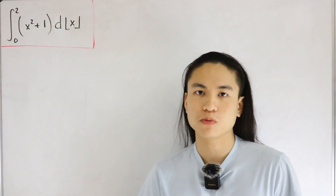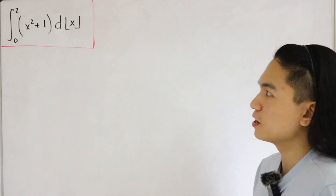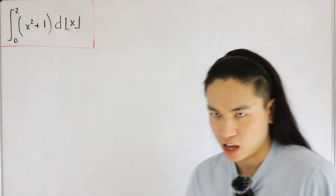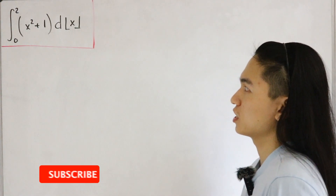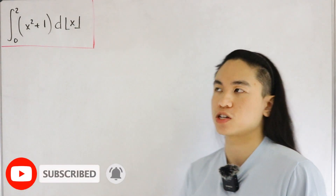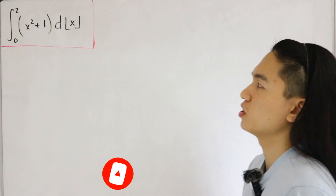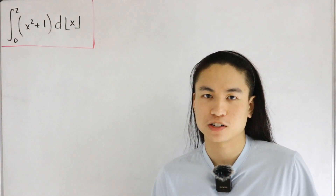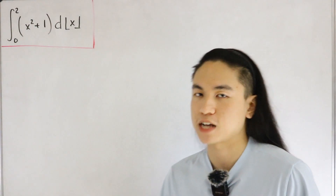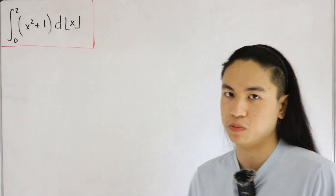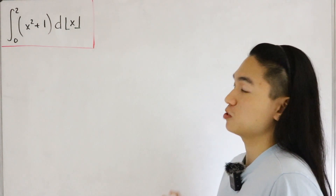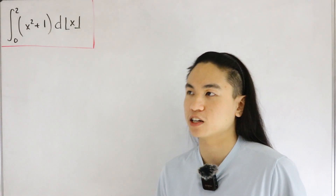We have a definite integral from zero to two of x squared plus one, but be careful — the differential here is with respect to the floor function of x. So it's x squared plus one, d of the floor function of x. This is completely different from a simple dx differential, so it's going to be a bit of a challenge — and personally I find it a fun and interesting one.